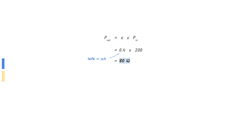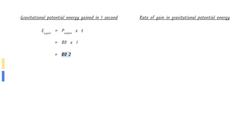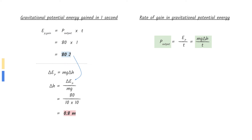First, let's find the output power. The output power can be found by multiplying the efficiency with the input power. Here is a visual representation of the power going into and out of the motor. There are two ways to approach this question. First, we can calculate the gravitational potential energy gained in one second. Power output of 80 watts times one second equals 80 joules. Rearrange the equation for gravitational potential energy to make height the subject, substitute in the values to find the answer. Another way is to divide the gravitational potential energy with time to change it to rate of gain in gravitational potential energy, which is also the output power. Likewise, rearrange to make height the subject and substitute in the values to find the answer.